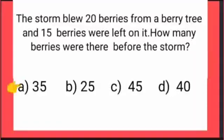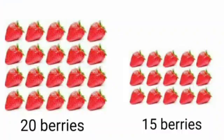Option A is 35. Option B is 25. Option C is 45 and option D is 40. Now let's see which option from given options is correct. When storm came it blew away 20 berries from berry tree and 15 berries were left on the tree. It means which berries were fallen, these were on the tree.